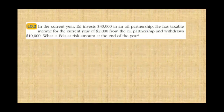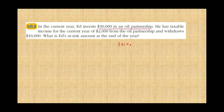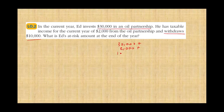Let's look at an example to make sure we understand the at-risk amount concept. In the current year, Ed invests $30,000 in an oil partnership — that increases his at-risk amount. His taxable income in the current year was $2,000 — the business made income, that increases his at-risk amount. And he withdrew $10,000 — that reduces his at-risk amount. So all in all, the at-risk amount for Ed is $22,000.